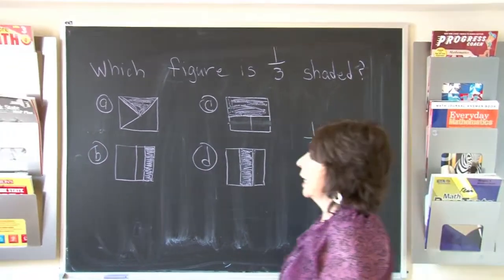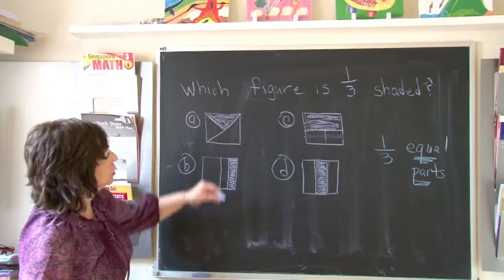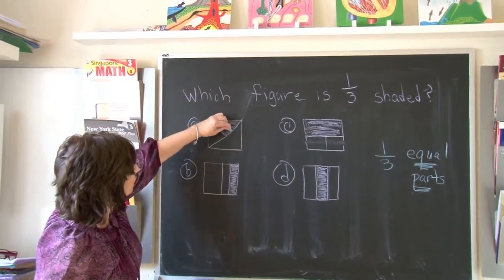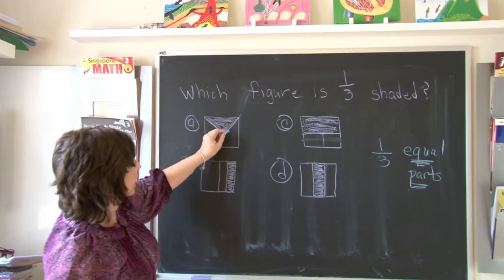So let's look at A. This is a square. If I put a square on the diagonal, this is one-half.